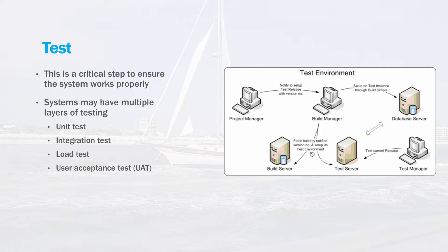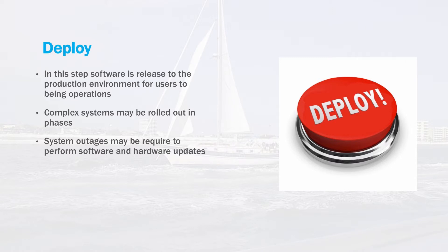This is only one of many high-profile software projects that have encountered this type of problem. If you can simulate a load before it goes into production and ensure that it'll work properly, it will save your users a lot of frustration and also save your project a lot of money. Once testing is successfully completed, the software will then be deployed into the production environment. These deployments are generally scheduled on off hours or weekends as to not disturb users of the existing system. Large systems may be rolled out in phases, and user training may also be done at this time. Large systems will also require a communications plan to alert users when the new system will go into production and how they need to prepare for it.